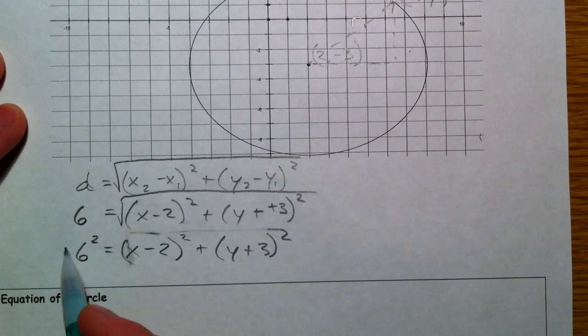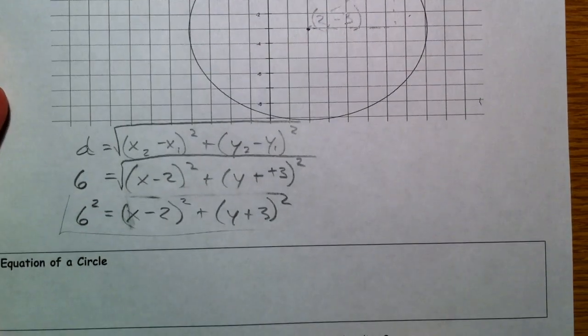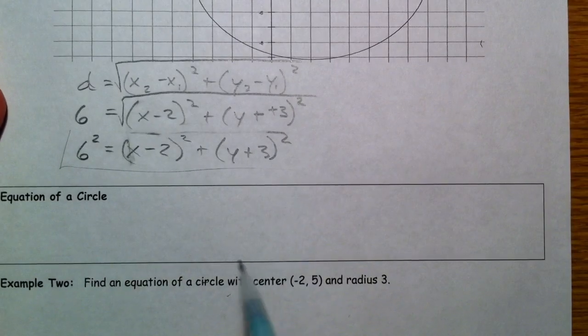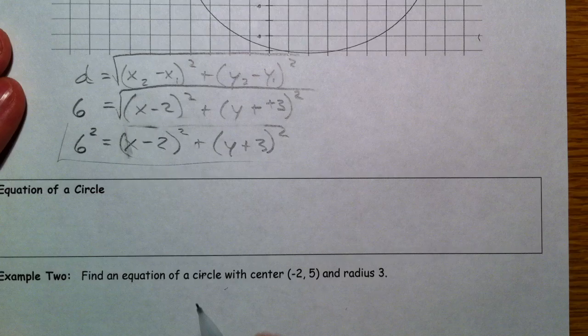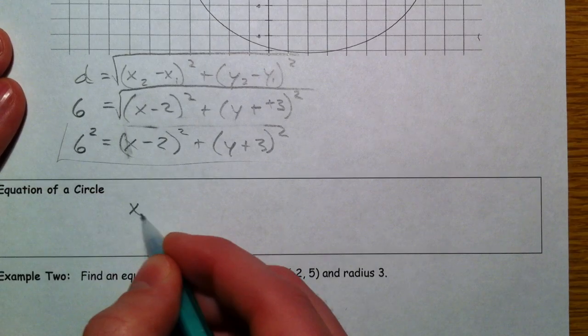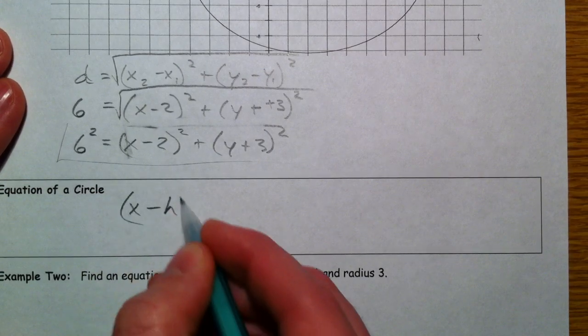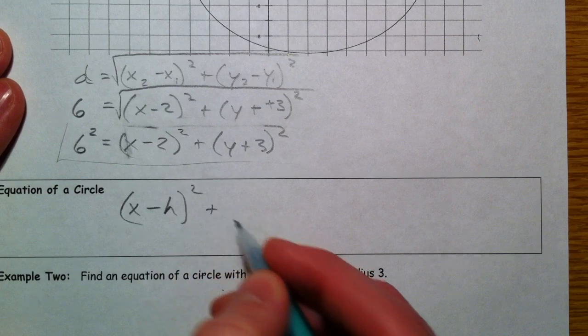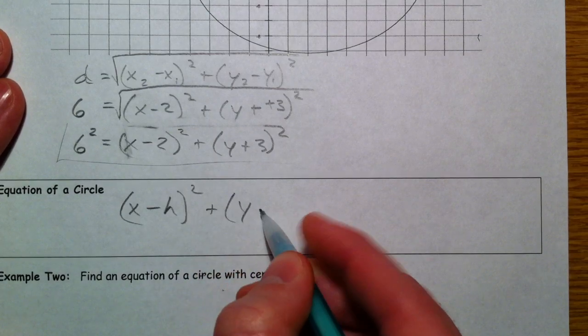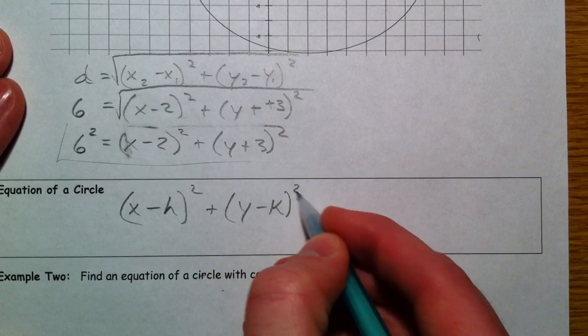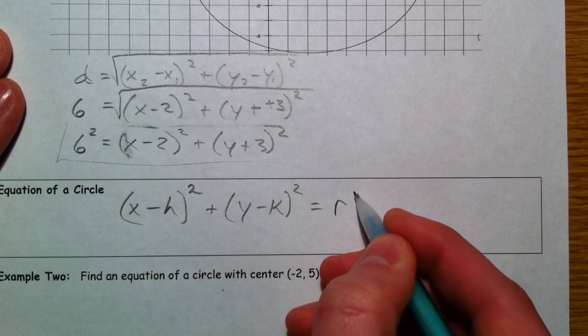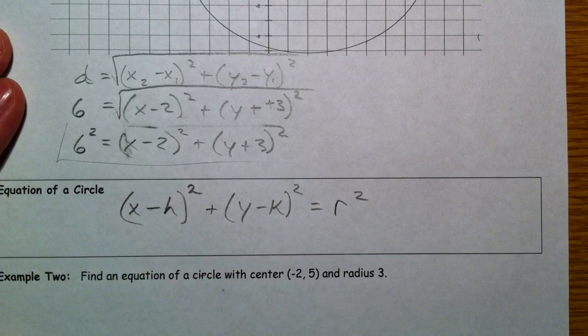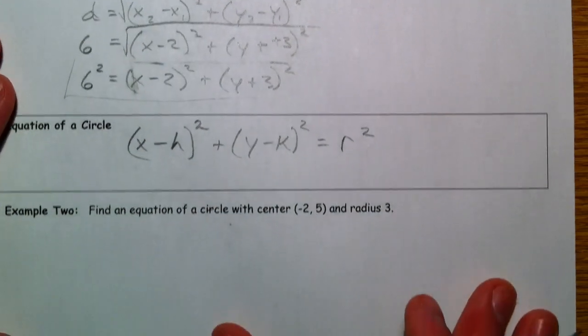So, that's the equation of the circle. And so, notice that it's really just the distance formula, or really Pythagorean theorem for a circle. And so, it's x minus your h squared, plus y minus your k squared, equals whatever your radius is squared.